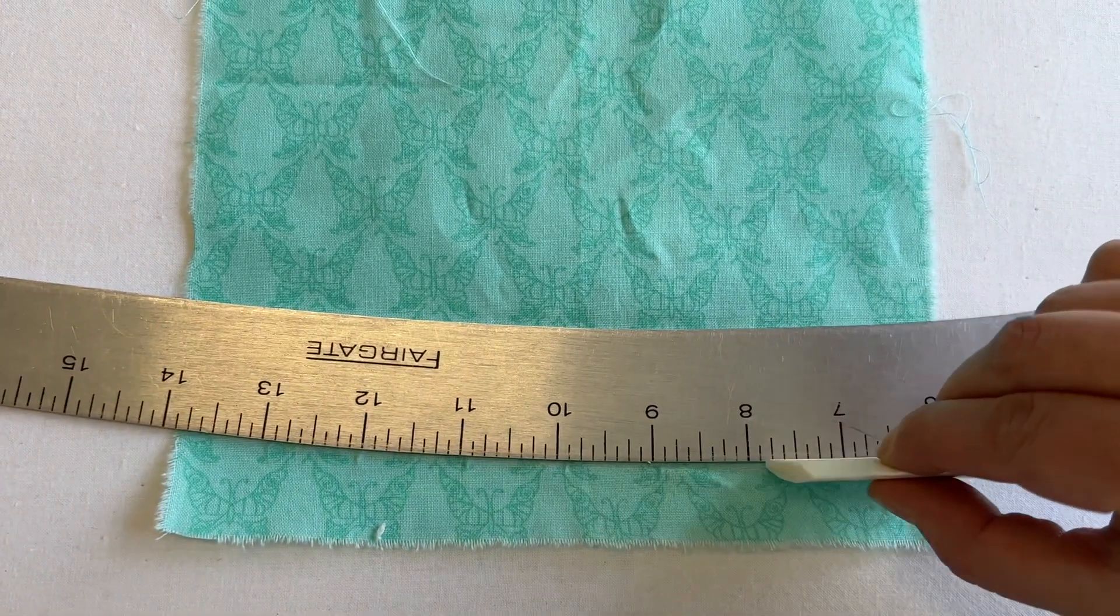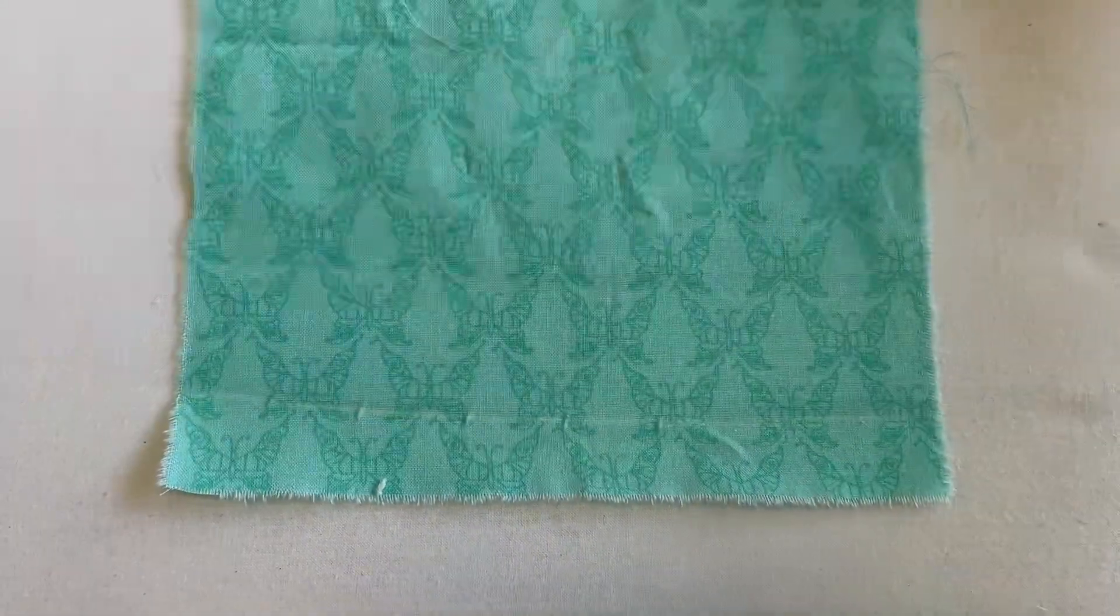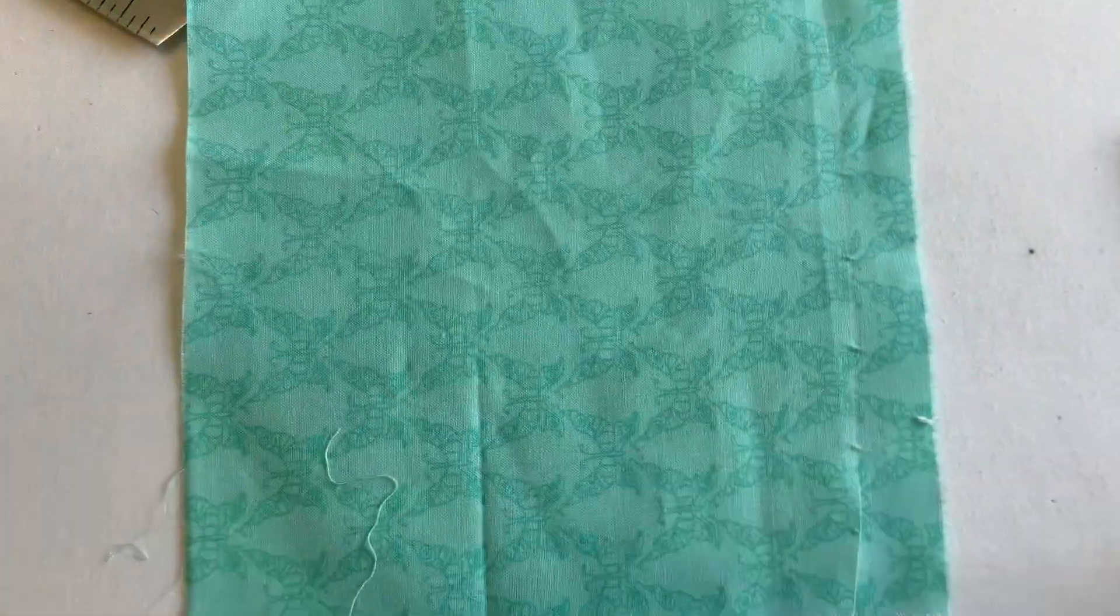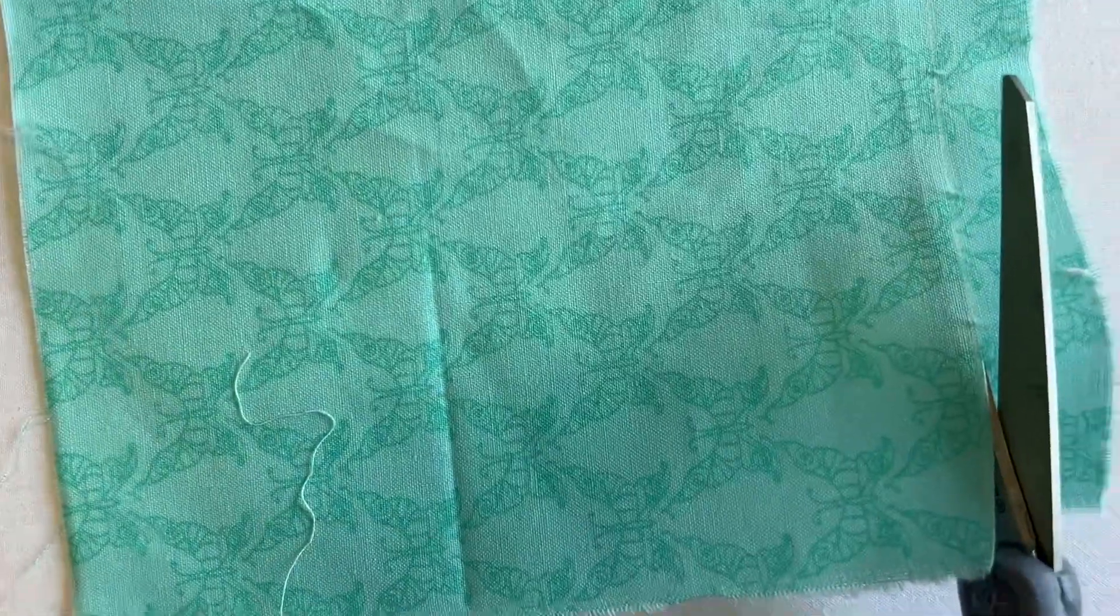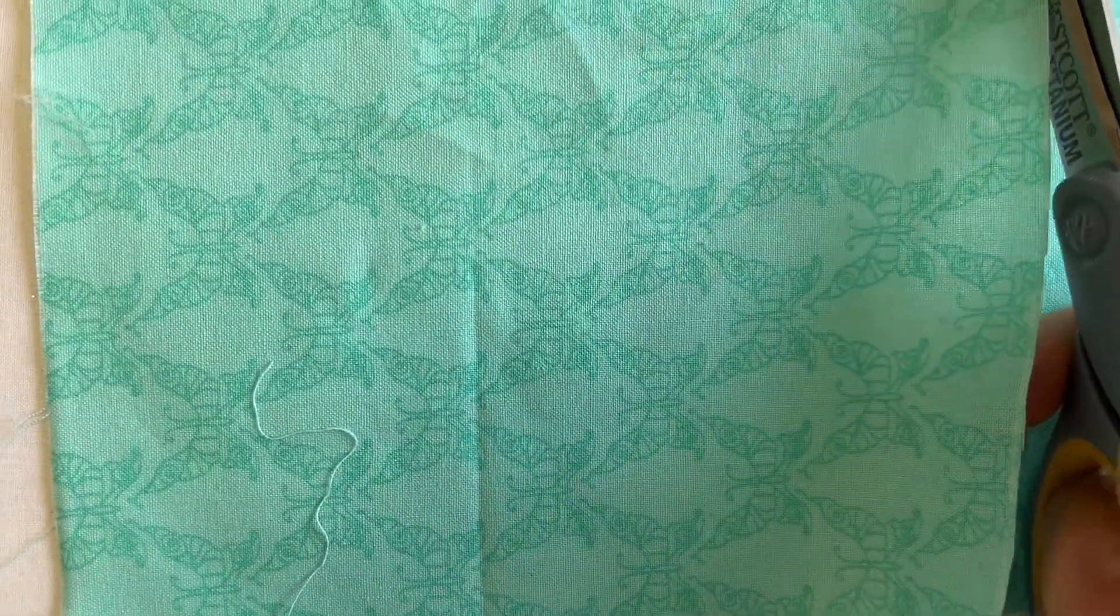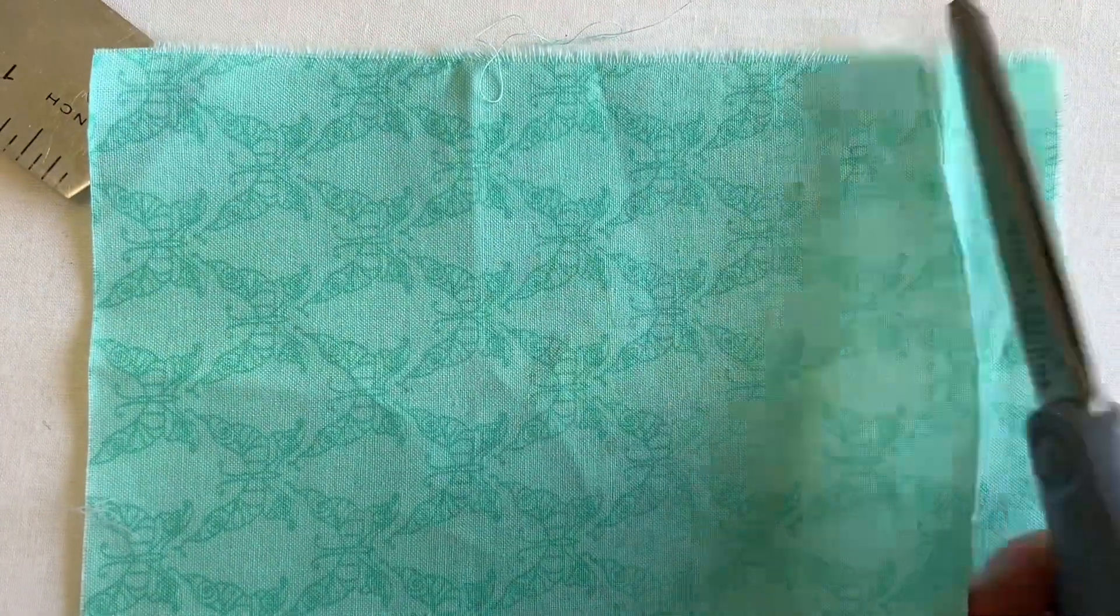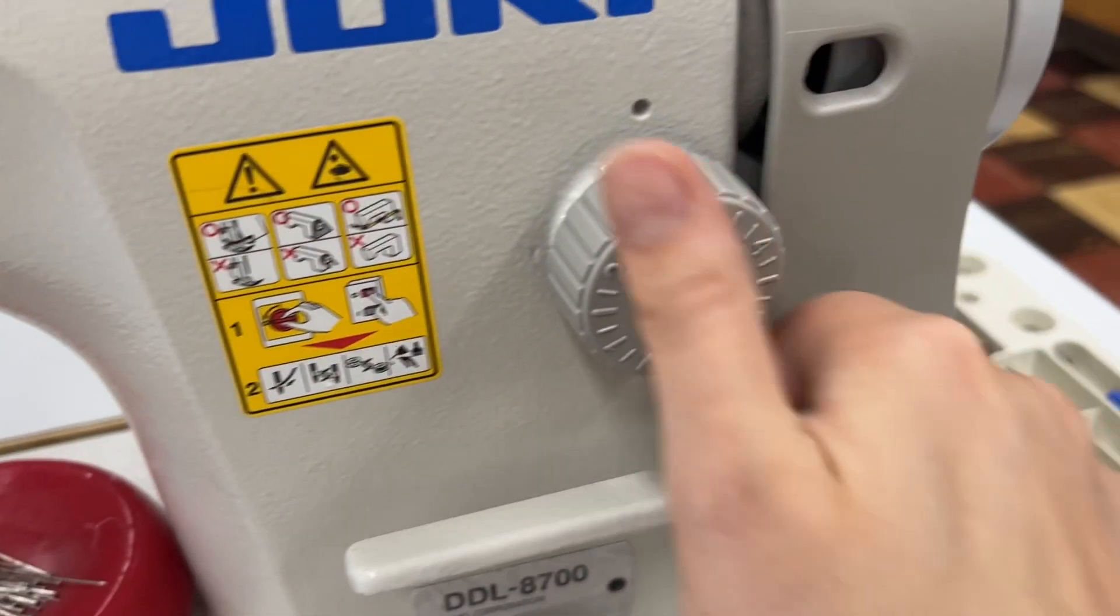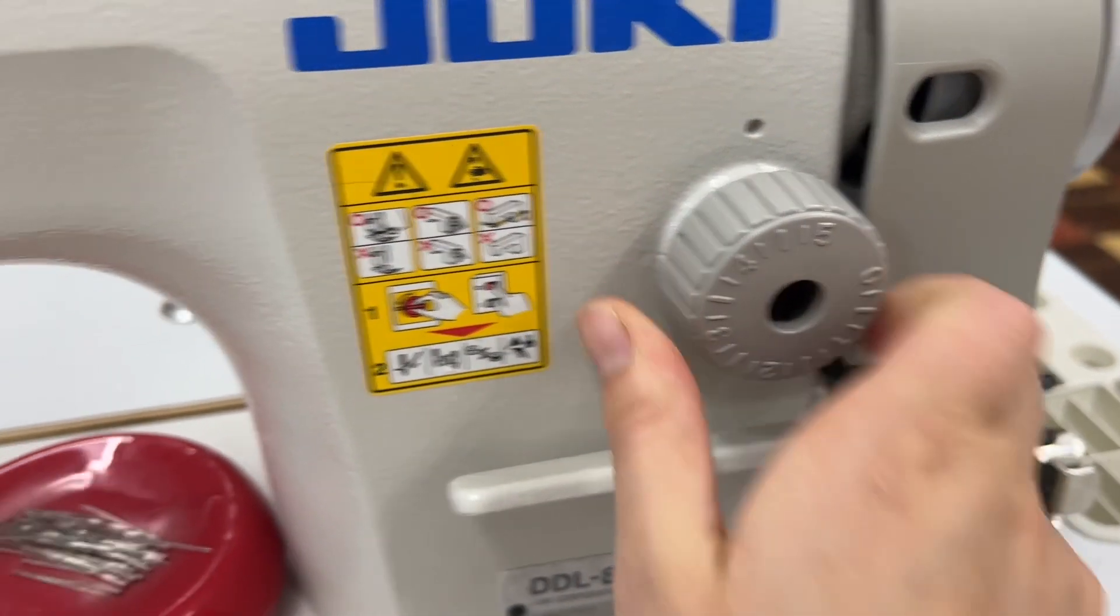To begin the uneven slip stitch on a curved hem, use a curved ruler and a piece of chalk to mark a curve on your fabric sample. Next, cut the line where you marked so that you have a curved edge at the bottom of your sample as if to replicate a hem.